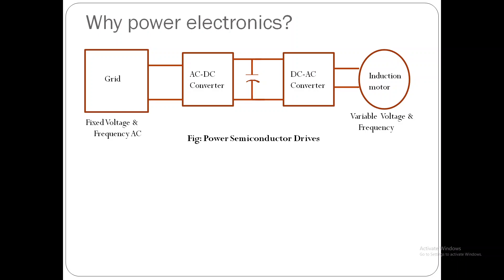A two-stage Power Electronics converter is considered as a solution: an AC to DC converter to convert AC supply from the grid into DC at the DC link, and a DC to AC converter to convert DC at the link into the required AC. This way, one can control the output voltage of the DC to AC converter and thus control the speed of the induction motor.